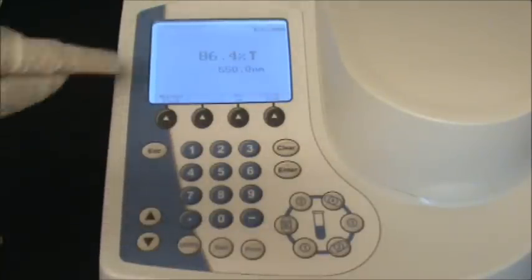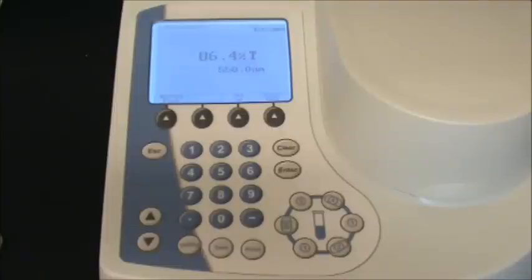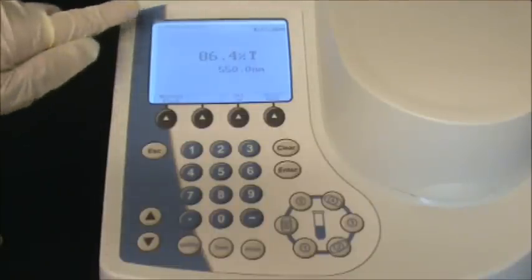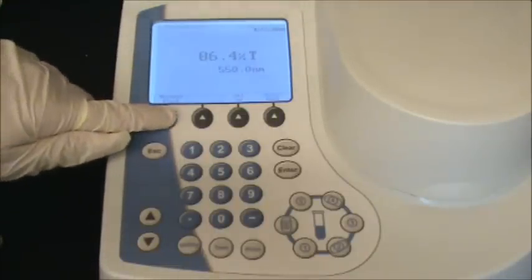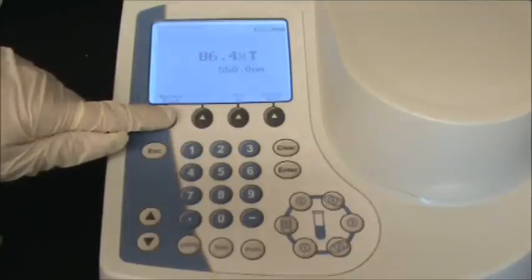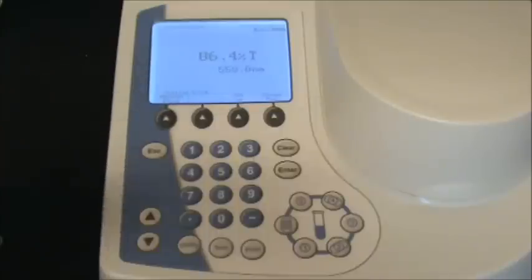You'll see the machine change to the new wavelength you want to read at. Let's suppose we want to read transmittance. Make sure the first thing you do is zero the machine by measuring the blank. Push measure blank. This will take a few seconds. Now you see it reads 100% transmittance, so you know the machine has been calibrated to take a reading.